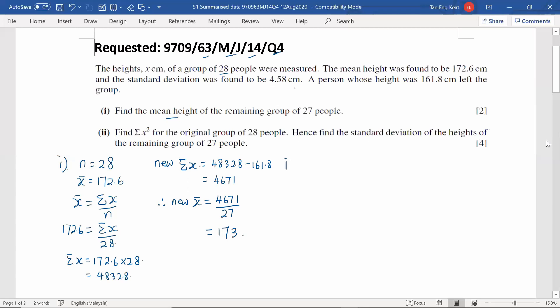Now we move on to part two. Part two is asking you to find the sigma X squared for the original group of 28 people. So in order to find this, first, let me write down the standard deviation formula.